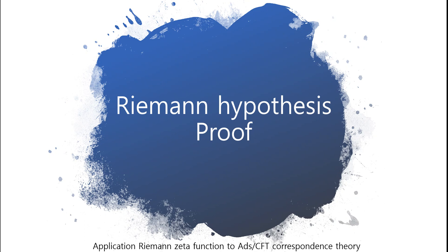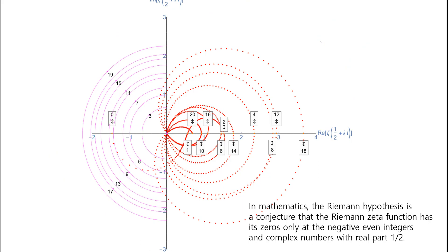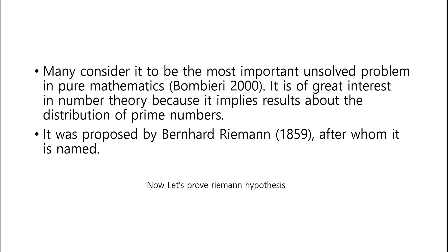How do you consider the Riemann Zeta function to achieve CFT correspondence theory? In mathematics, the Riemann hypothesis is a conjecture that the Riemann Zeta function has its zeros only at the negative even integers and complex numbers with real part 1/2. Many consider it to be the most important unsolved problem in pure mathematics. It is of great interest in number theory because it implies results about the distribution of prime numbers. It was proposed by Bernhard Riemann, after whom it is named.